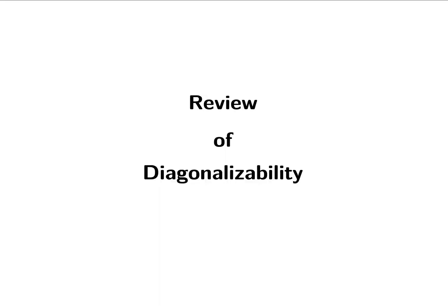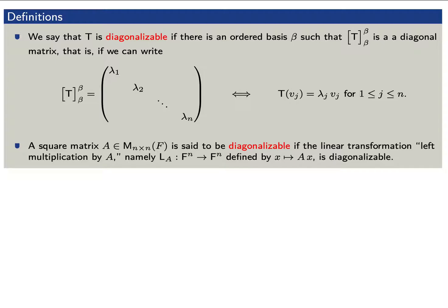Recall that a linear transformation T is said to be diagonalizable if there exists an ordered basis beta such that the matrix representation of T with respect to beta is a diagonal matrix. That is, if v sub j are the vectors from our basis beta, then T applied to v sub j is a scalar lambda j times v sub j. A square matrix A is said to be diagonalizable if the left multiplication linear transformation is diagonalizable.